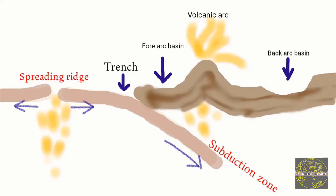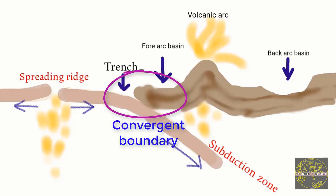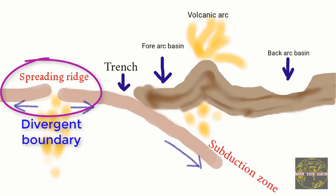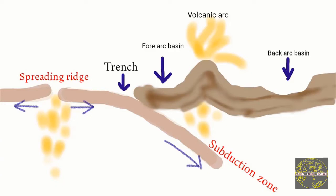Let's have a quick look at the different tectonic settings which are related to magmatism. In convergent and divergent boundaries, magmatism is very common. In a convergent boundary, two plates come towards each other and in most cases the heavier plate is subducted beneath the lighter plate. In divergent plate boundaries, the plates move away from each other, creating a magmatic ridge where magma is continuously added to form new igneous rocks, contributing to new ocean floor. Hence, this boundary is also termed the spreading ridge.